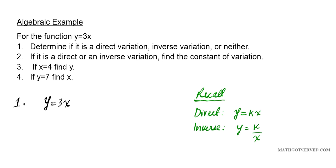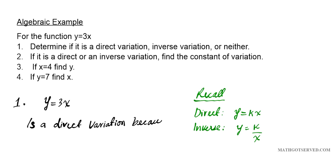We can clearly see that it matches the direct variation. So y equals 3x is a direct variation in function form, because it is of the form y equals kx.